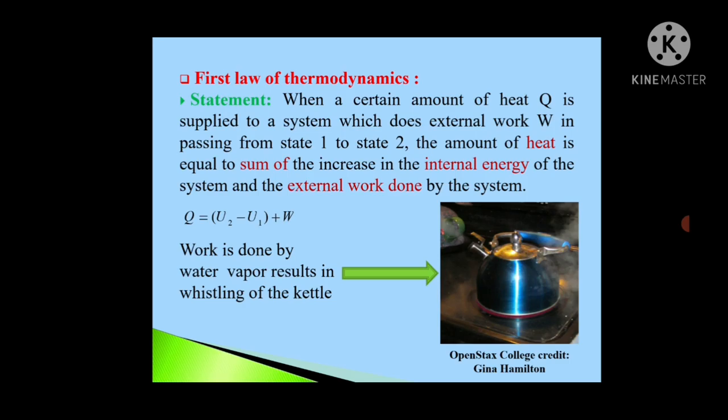See in this diagram, one kettle is shown. In this kettle water is there and the kettle is placed on a flame or on some stove. If it gets heat from that source then it will be converted to vapour. And due to this vapour, the kettle gives whistling. Whistling of kettle can be observed here because work is done by the water vapour.